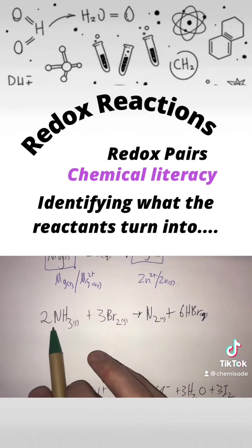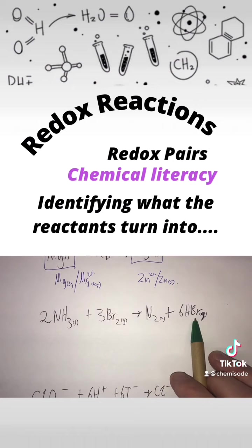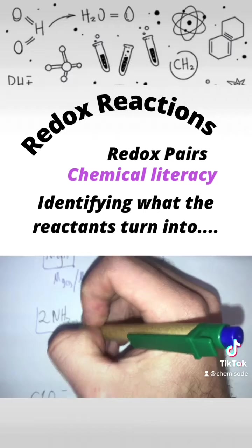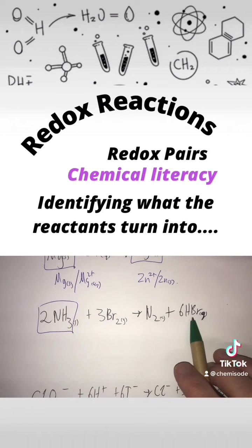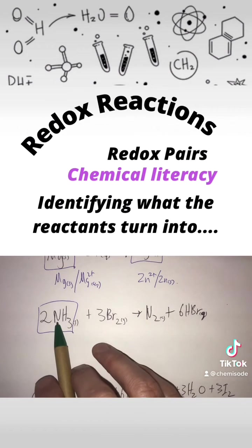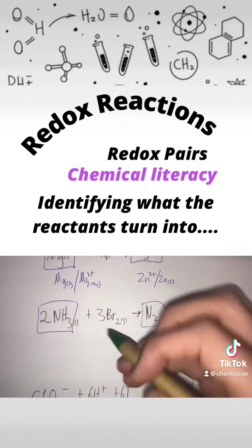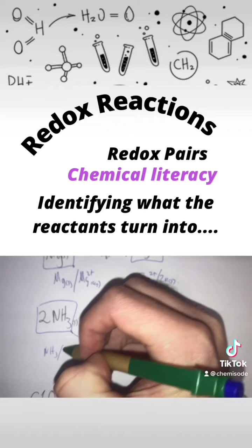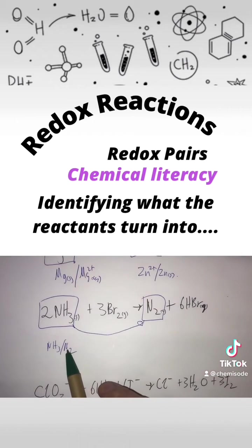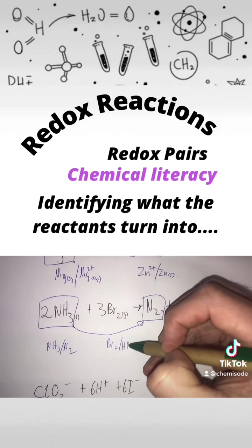In this case we've got ammonia reacting with bromine to form nitrogen and hydrogen bromide. All we've got to look for is what is this turning into — what's our ammonia turning into? Well, it's probably not going to be turning into the bromine because that's a completely different atom. What this ammonia is going to be turning into is our nitrogen. Both of these have nitrogen in them, so this makes sense as our redox pair. That means the other one will be bromine and hydrogen bromide.